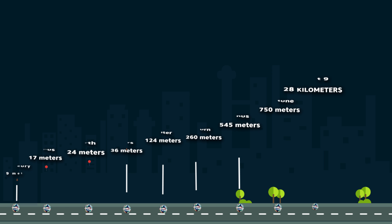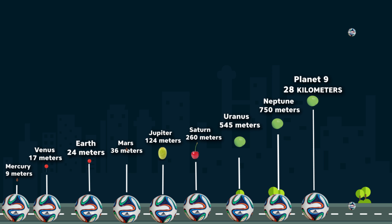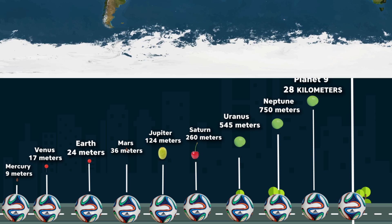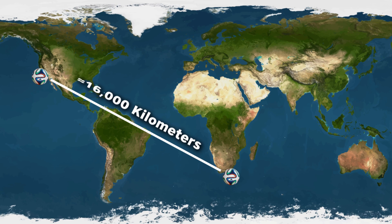On the same scale, Proxima Centauri, our nearest star, would be almost 16,000 kilometers away. It's the same distance as if you put a soccer ball sun in San Francisco, then Proxima Centauri would be in Cape Town in South America with the same size of another soccer ball. That's the real distance between our solar system and our nearest neighbor.